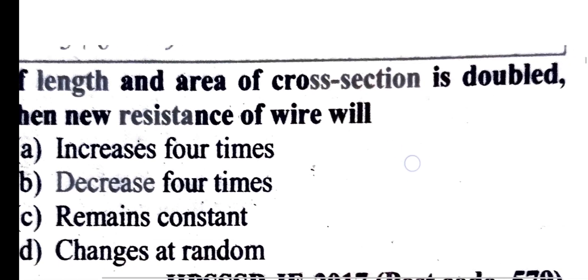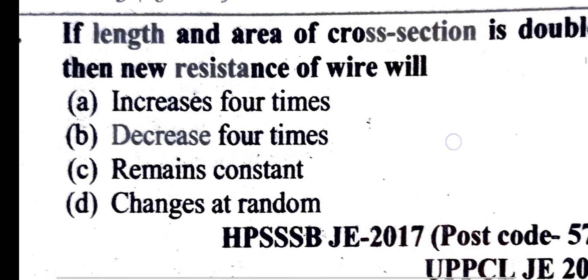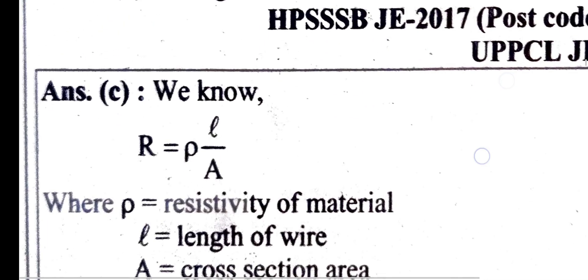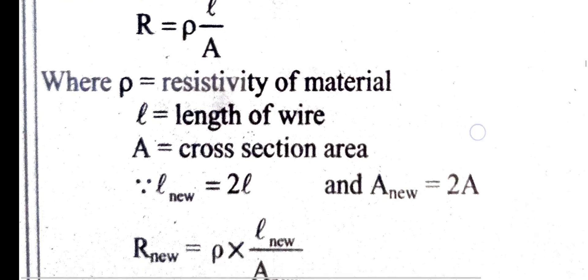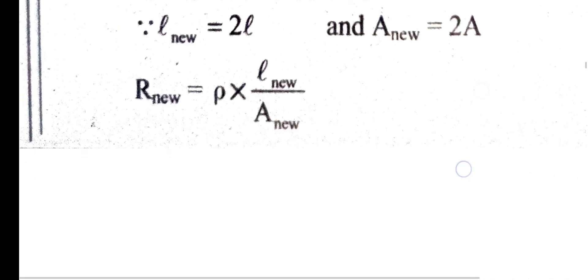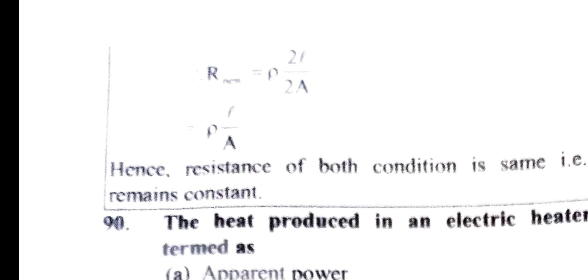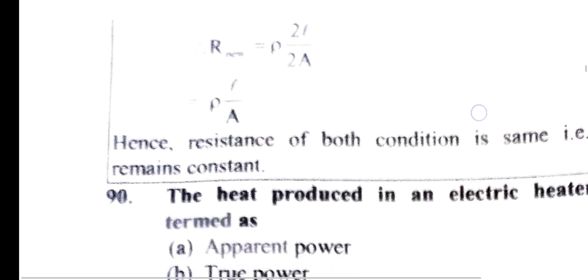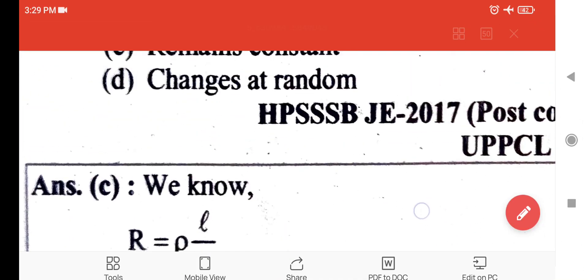If both the length and the area of cross-section of a wire are doubled, the new resistance will be: R equals ρL/A. The new length is 2L and the new area is 2A. Substituting, R1 equals ρ(2L)/(2A), the factor of 2 cancels, and the resistance remains constant — equal to the original R.